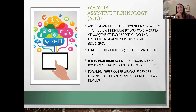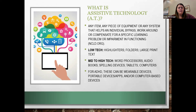The technical definition of assistive technology is any item, piece of equipment, or system that helps an individual bypass, work around, or compensate for a specific learning problem or impairment in functioning. There can be very low-tech versions of this all the way up to really sophisticated high-tech computer programs and technology tools. For ADHD, this often includes things like wearable devices, portable devices, apps and programs on tablets and phones, and computer-based software.